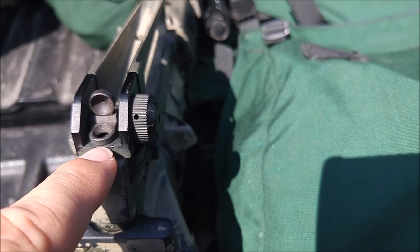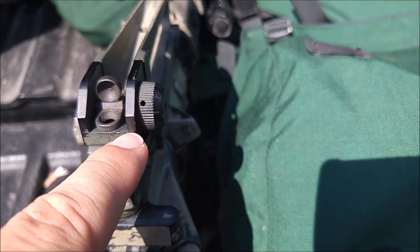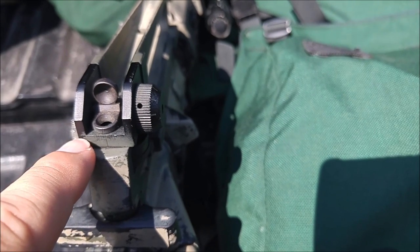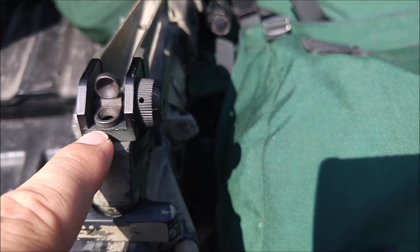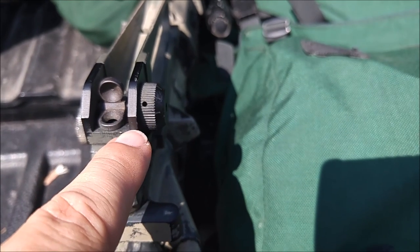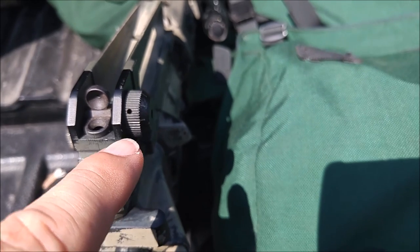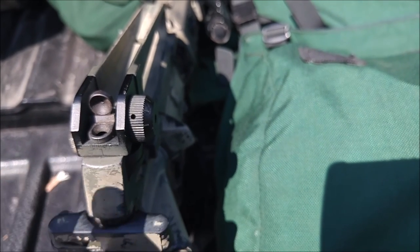If you don't trust your center point, you can rotate this wheel all the way to one side or the other, count all the clicks across, divide that in half. Let's say it took 30 clicks to move this rear sight aperture from the extreme left to the extreme right, then you would divide that by two. That's 15. Move it 15 clicks back and you would be centered.